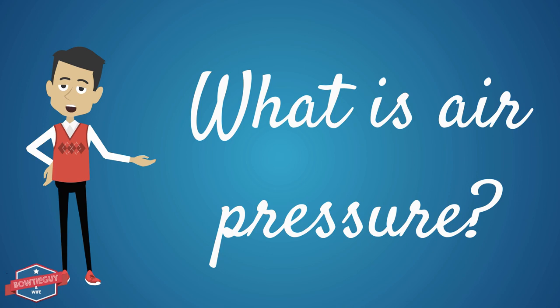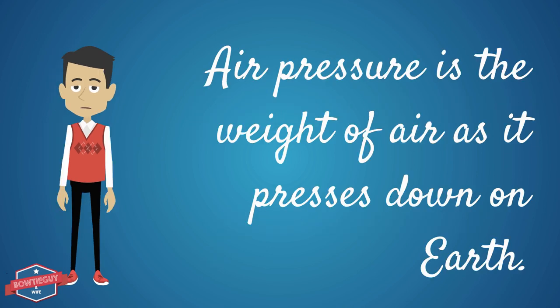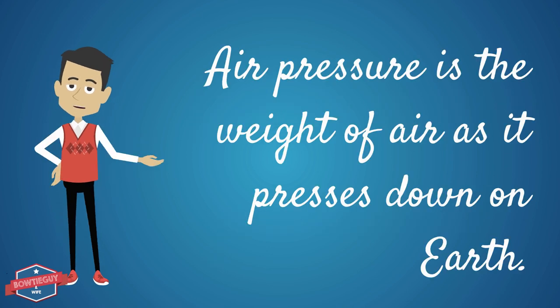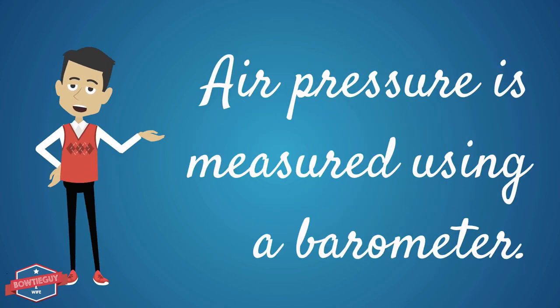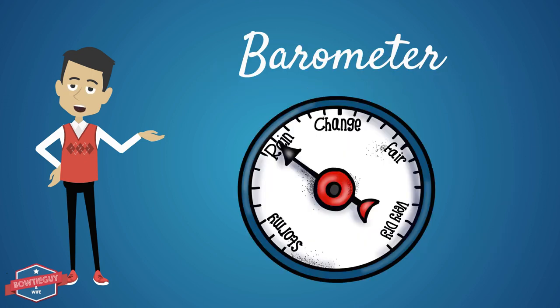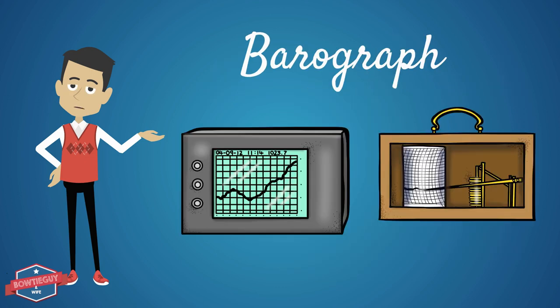What is air pressure? Air pressure is the weight of air as it presses down on Earth. Air pressure is measured by a barometer. Air pressure that is measured over the course of time is measured using a barograph.